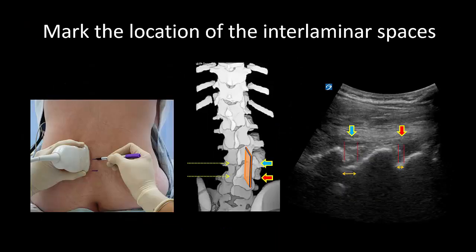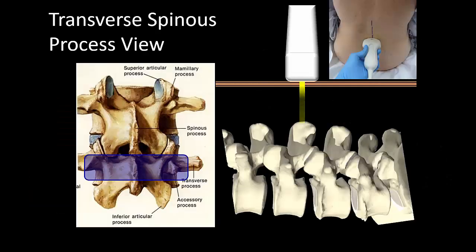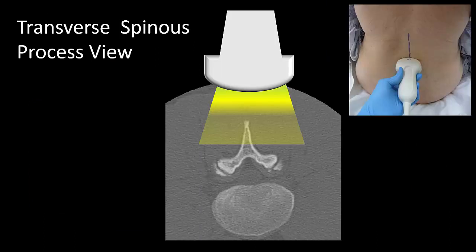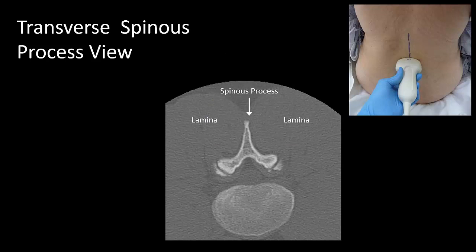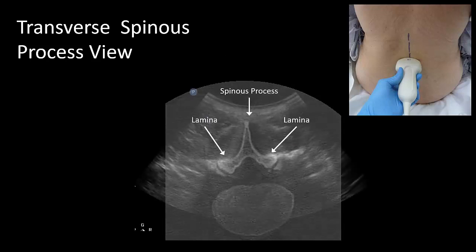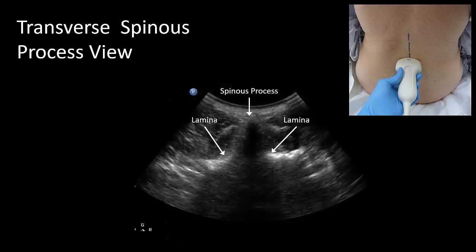Having identified and assessed the interlaminar spaces in the parasagittal oblique view, the location of these spaces is marked on the skin. The next step is to turn the probe into a transverse orientation, where one of two views is obtained. The first is a spinous process view, where the bony spinous process and lamina produce a characteristic acoustic shadow that looks a little bit like a church steeple, with a hyperechoic reflection at the tip of the spinous process.